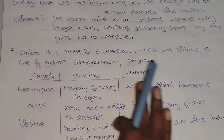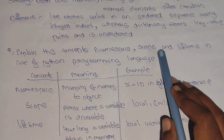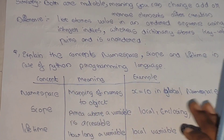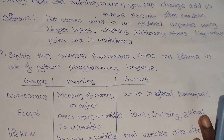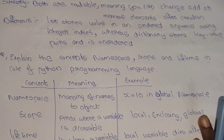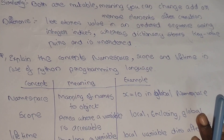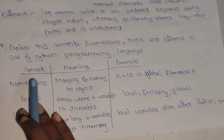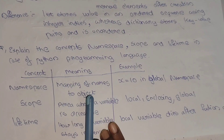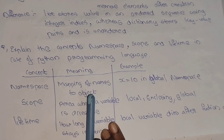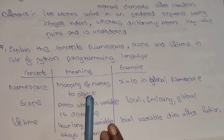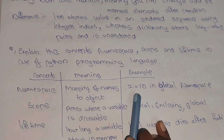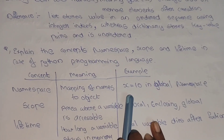Next question: explain the concepts of namespace, scope, and lifetime in the case of Python programming language. Namespace is a mapping of names to objects. For example, if x is equal to 10, the variable is assigned to a name.